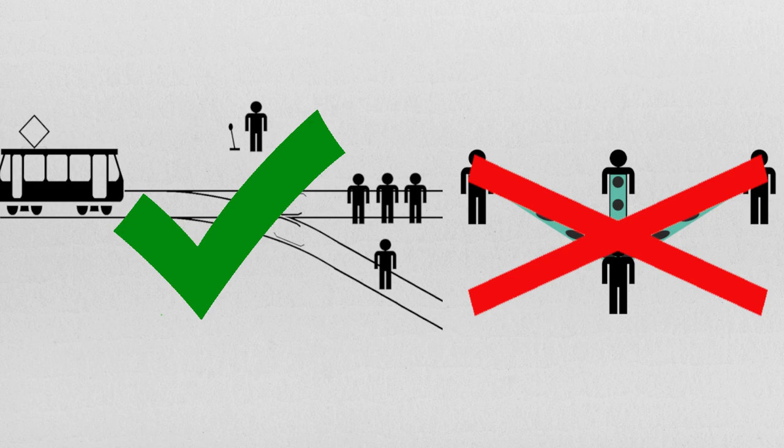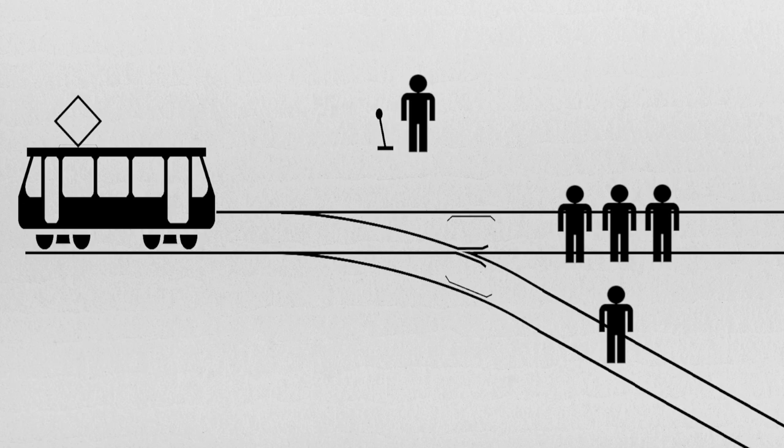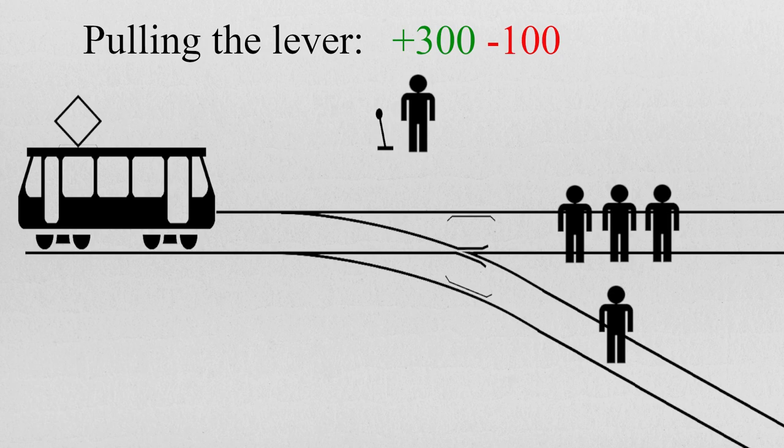Here we explain how the two settings are different in a simple act-consequentialist framework. First, let's perform the eudaimonic calculus for the trolley problem. If one pulls the lever, three persons will be saved and one would die. These are important components in the eudaimonic calculus.